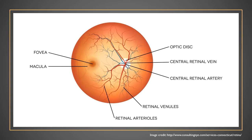When examining the retina through the pupil, one will see the different structures illustrated in this artist's rendition. The white circle to the right represents the optic nerve. The darker circle to the left represents the fovea, or the central aspect of the retina used when focusing directly. The blood vessels shown in blue and red supply the inner aspects of the retina.